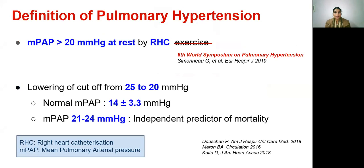As per the sixth world symposium, pulmonary hypertension is defined as mean pulmonary artery pressure more than 20 mmHg at rest by right heart catheterization. The exercise part of the definition was removed in 2008. The cutoff has been lowered from 25 to 20 mainly because of two reasons. In large populations, the normal mean pulmonary artery pressure has been found to be 14 with a standard deviation of 3, and mean pulmonary artery pressure varying from 21 to 24 is an independent predictor of mortality, as seen in multiple studies.